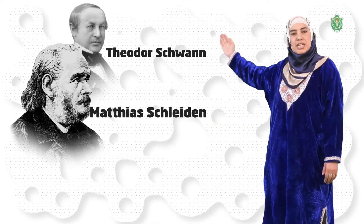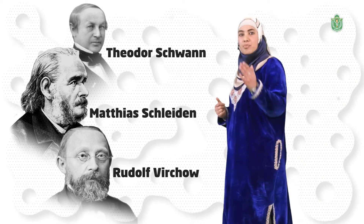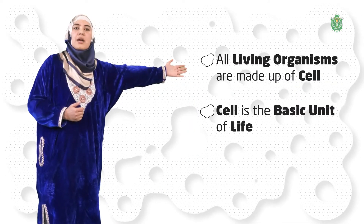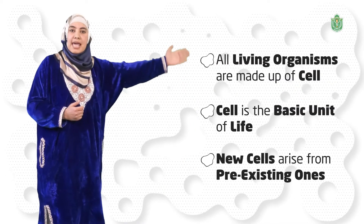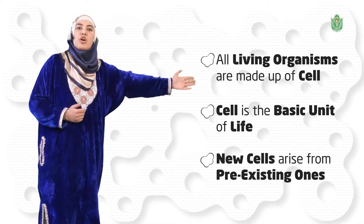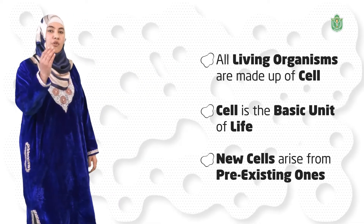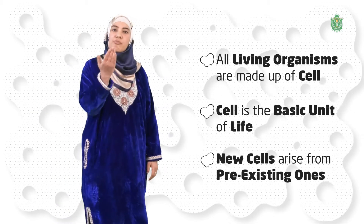Now we will discuss about the cell theory. It was the work of three eminent German biologists who conceptualized the cell theory. The postulates of this cell theory are: all living organisms are made up of cell; cell is the basic unit of life; new cells arise from pre-existing ones. These postulates of the cell theory form the basic principle of biology.